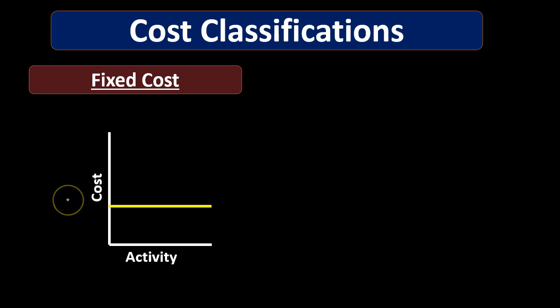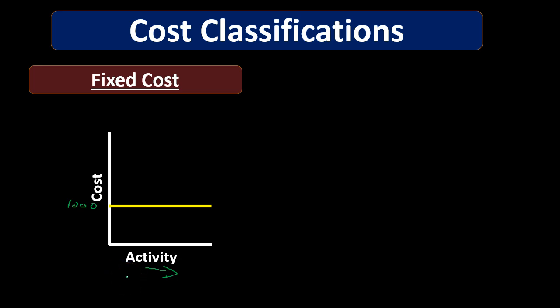Fixed costs mean that as the production level rises the cost remains fixed. So for example, if we have activity — say this is production — as we make more units of something the total cost remains the same. We're talking about total cost, not cost per unit. If we say rent is a thousand dollars a month, it doesn't matter how many units we make — whether we make one unit or a hundred things in that warehouse, the rent is still a thousand dollars.